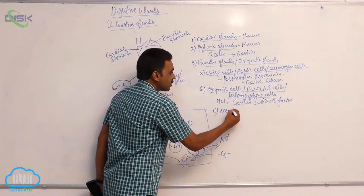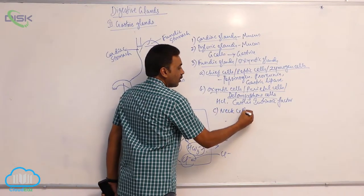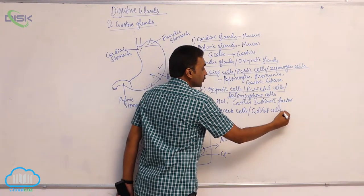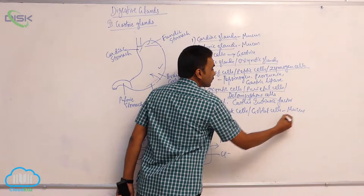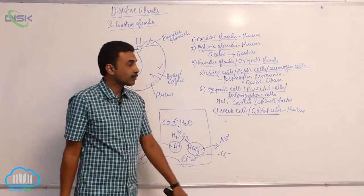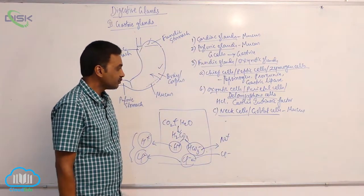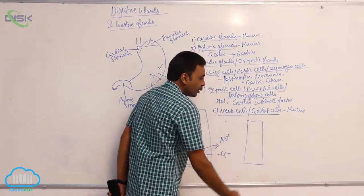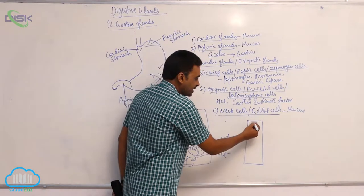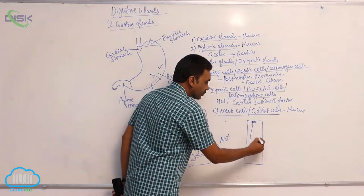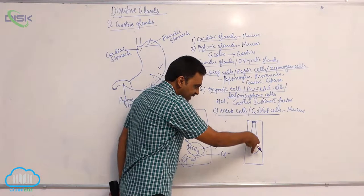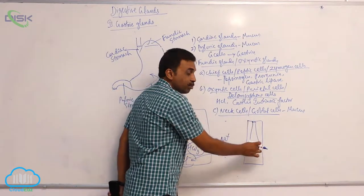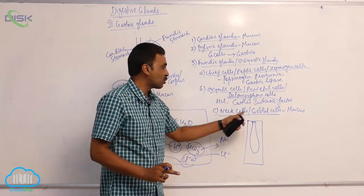The other type of cells are neck cells, also called goblet cells. They produce mucus. Neck cells are columnar in shape with a narrow depression — the cavity is narrow at one end and broad at the other, resembling a neck. That is why it is called a neck cell.